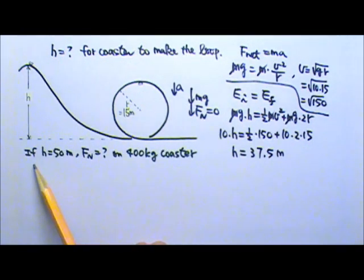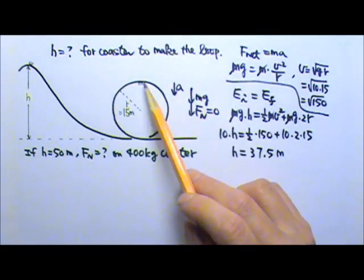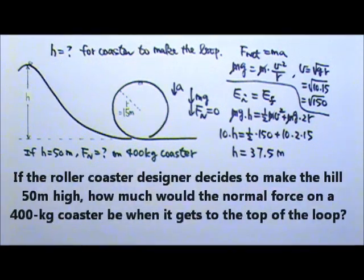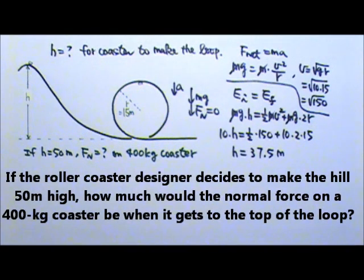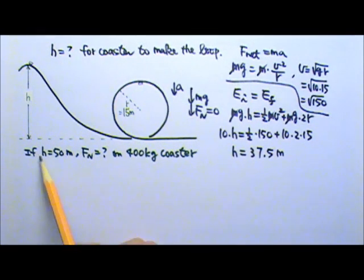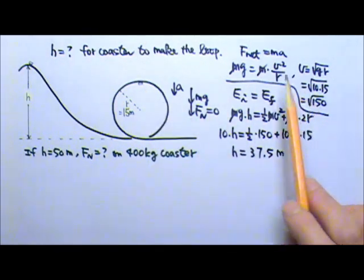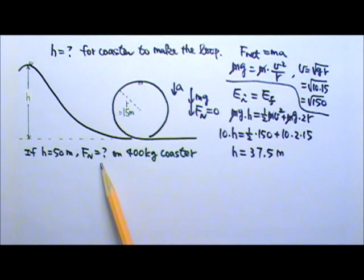Now suppose the roller coaster designer decides to make the hill 50 meters high. How much would the normal force be on the 400 kg coaster when it gets to the top of the circle? This time we know the height and we have to find the force. So it is kind of like this part but backwards. We have to first use the conservation of energy to find the speed up there and then use the speed and forces to find the force we are looking for.